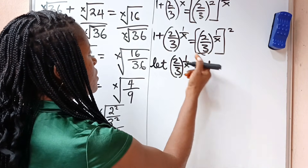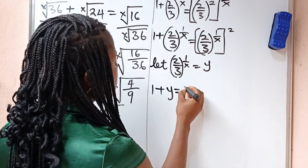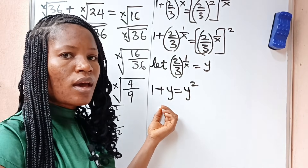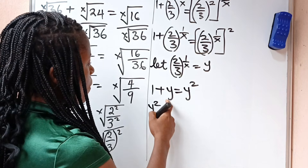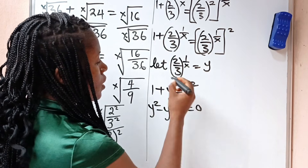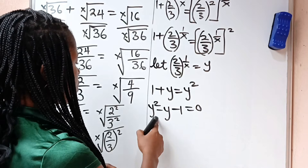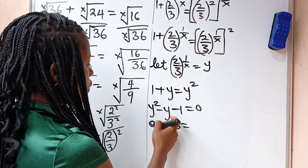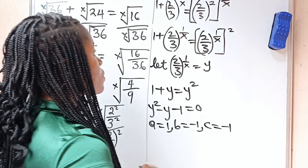That means if we substitute y in place of 2 over 3 to the power of 1 over x, we are going to have 1 plus y is equal to y squared. Now if we take this to the other side so that we have 0 — because this is a quadratic equation — we are going to have y squared minus y minus 1 is equal to 0. In this quadratic equation, a equals the coefficient of y squared, which is 1; b equals the coefficient of y, which is minus 1; and c equals the constant, which is minus 1 as well.